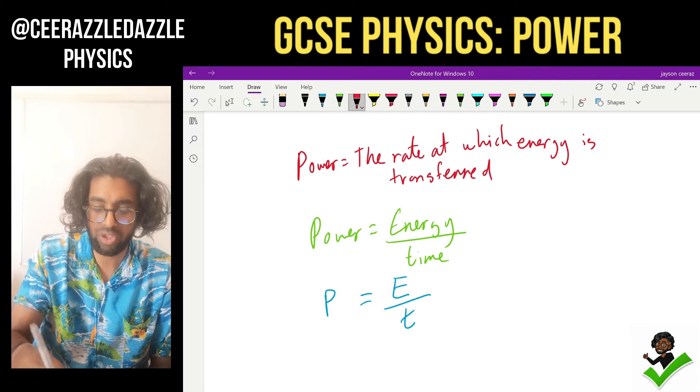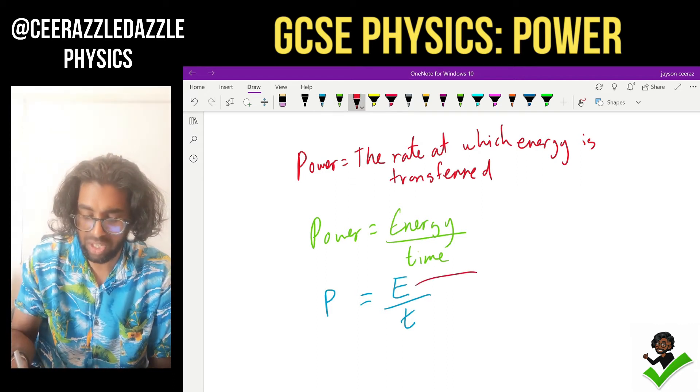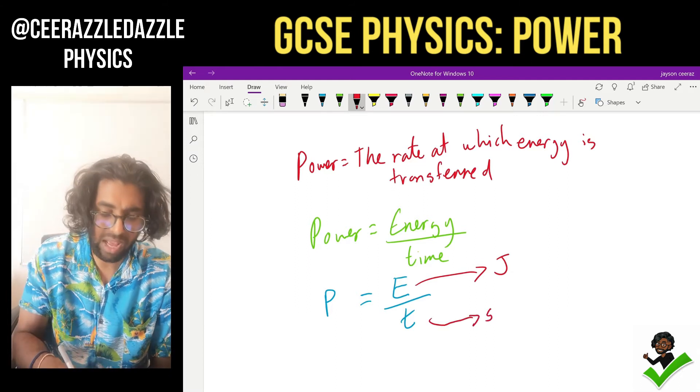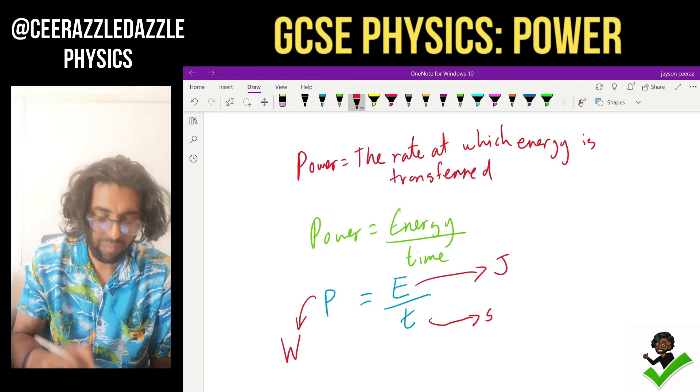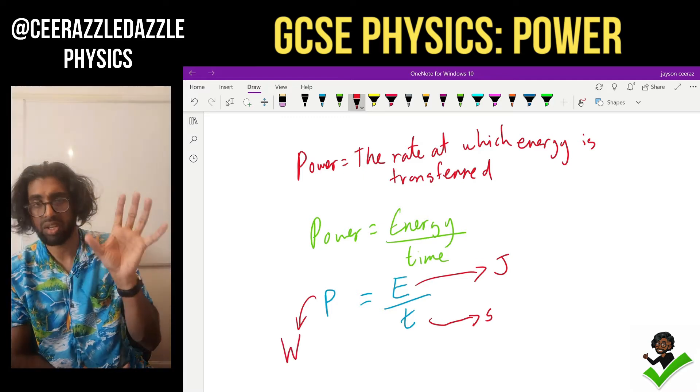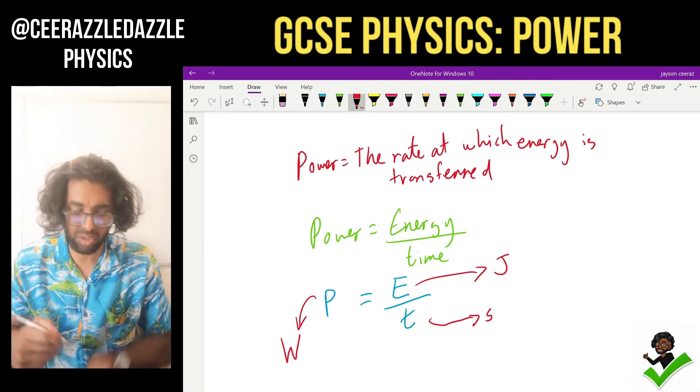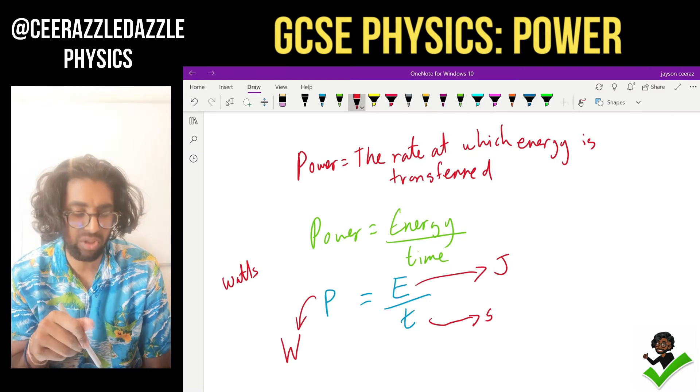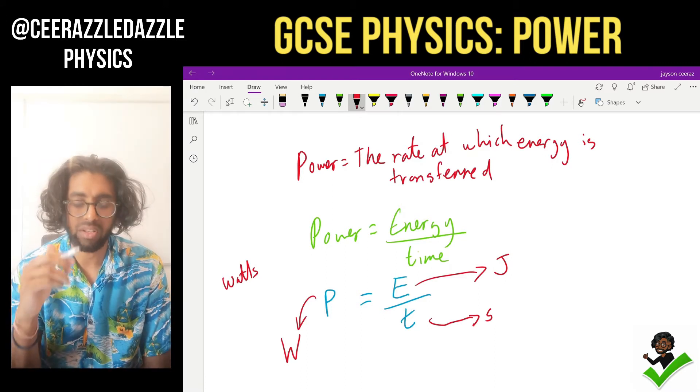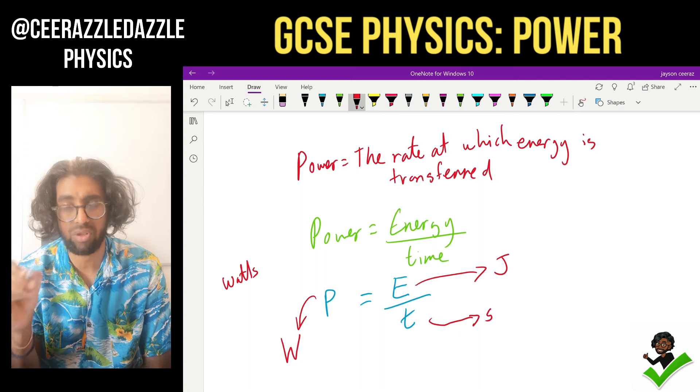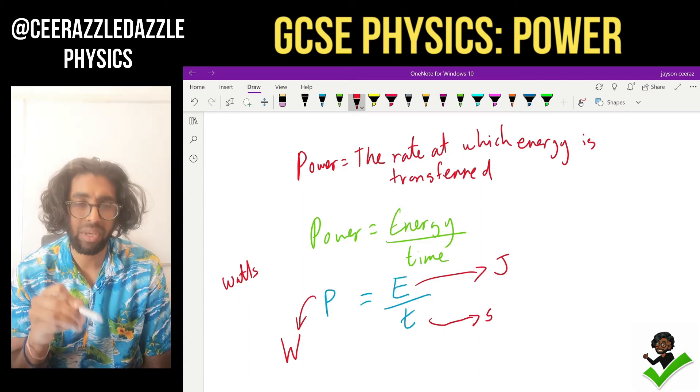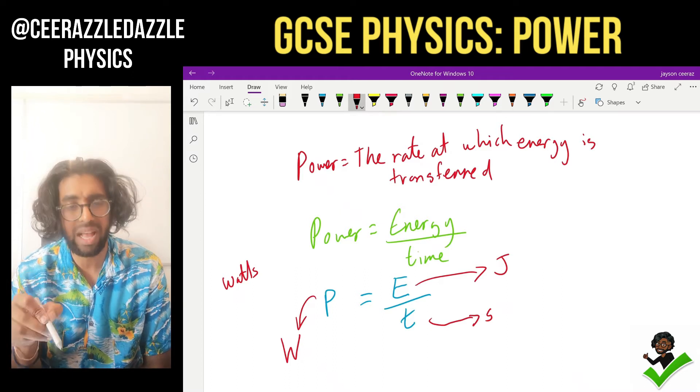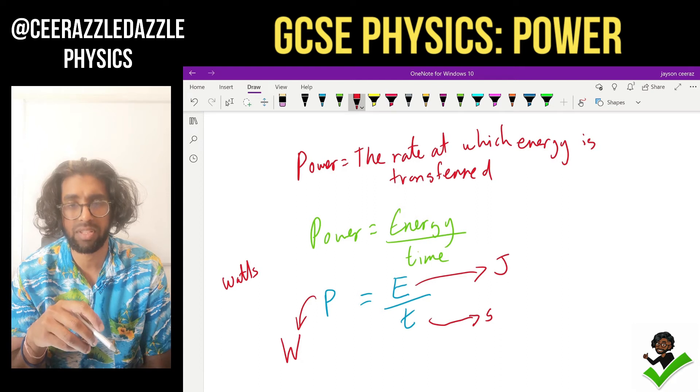Every time we have an equation we must also talk about the units. So energy is measured in joules. Time is measured in seconds. And power is measured in watts. Think about a light bulb. It's either 100 watt, 20 watts. So light bulbs are measured in watts as well. Power is measured in watts. Power is equal to energy over time. P is equal to E divided by T. Energy in joules, time in seconds, power in watts. And we're good to go for our first example.